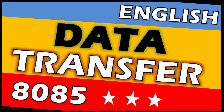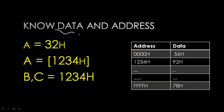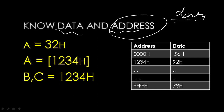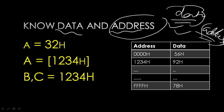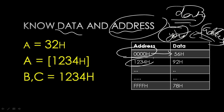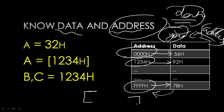Today we are going to understand one of the most important concepts of 8085 — data transfer instructions. First, let's understand what data and address mean. An address is a location at which you can store data. For example, your home is your address and at that address you are living — so you are the data. In this presentation, square brackets indicate an address.